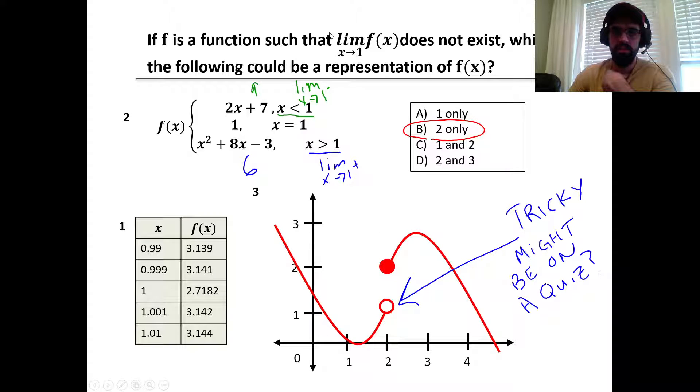The question says the limit as x approaches 1 of f(x). And so as x approaches 1, the limit for this function does exist because the left side and the right side do equal each other. So number 3 could not represent f(x). So our best answer is B, only number 2.